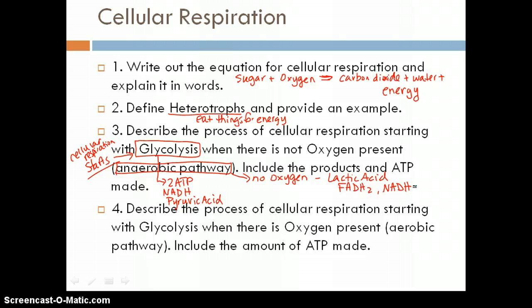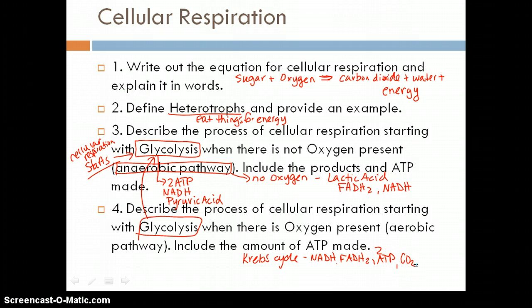The process of cellular respiration starting with glycolysis when there is oxygen present, aerobic pathway, and the amount of ATP used. So glycolysis is still the same. We just described that there. Aerobic means there's oxygen. So we have the Krebs cycle. And in this part, we make NADH, FADH2, ATP2, and CO2. And then we go to the electron transport chain. And here we get 34 ATP. So this is where we make a whole lot of energy. So total, we can get 38 ATP out of cellular respiration if we go glycolysis, Krebs cycle, electron transport. But if you go to the lactic acid side, you'll make no ATP. Well, you'll get the two from glycolysis, but then no extra ATP.